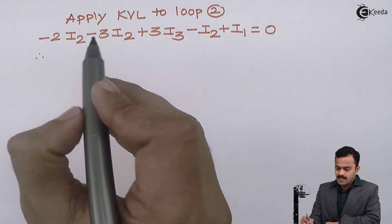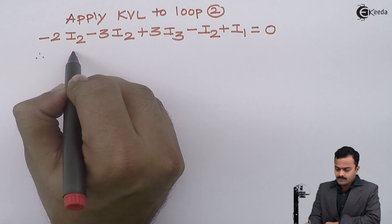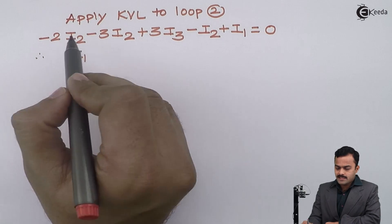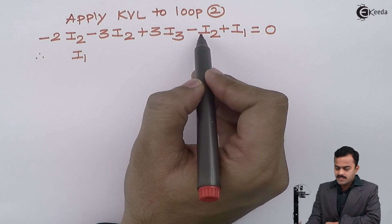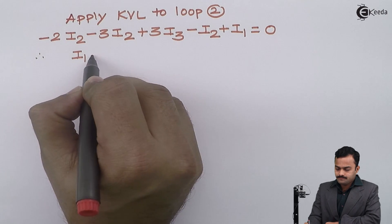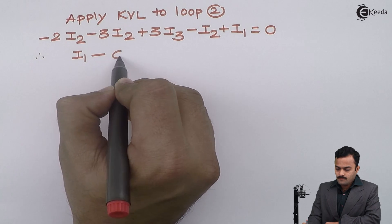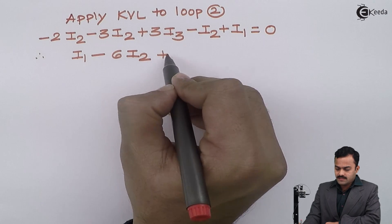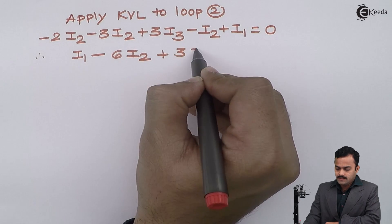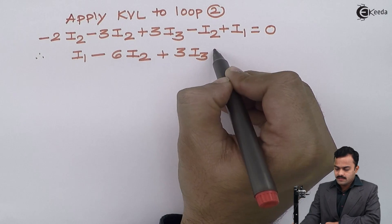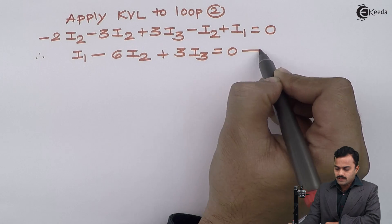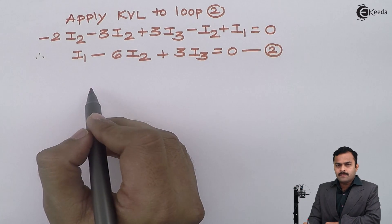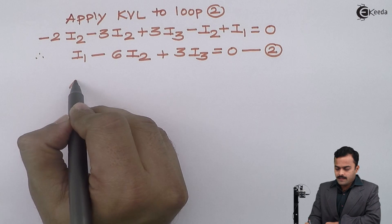After simplifying loop 2, i1 remains as is; combining the i2 terms gives minus 2 minus 3 minus 1, which becomes minus 6i2; and 3i3 remains. So equation number 2 is: i1 minus 6i2 plus 3i3 = 0.